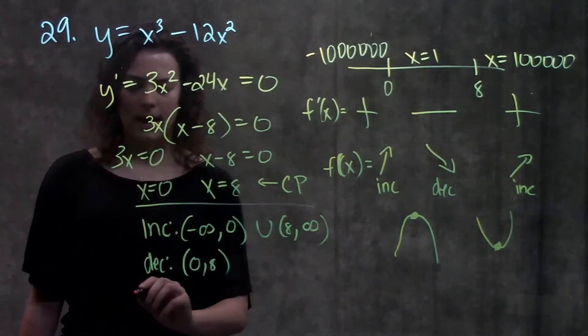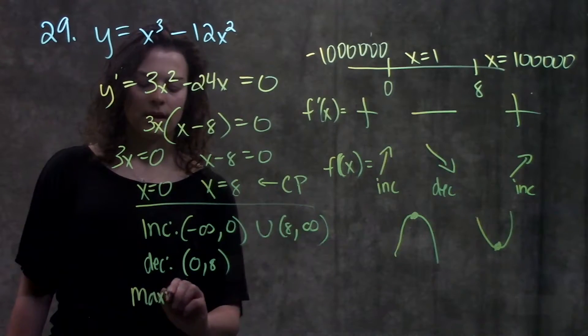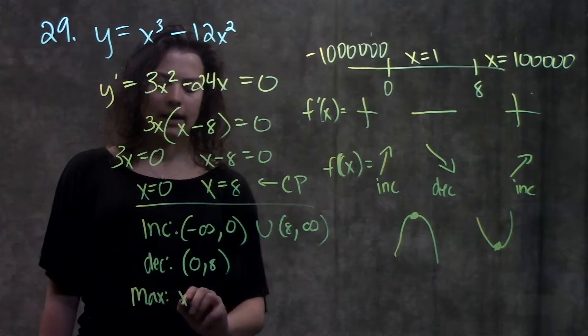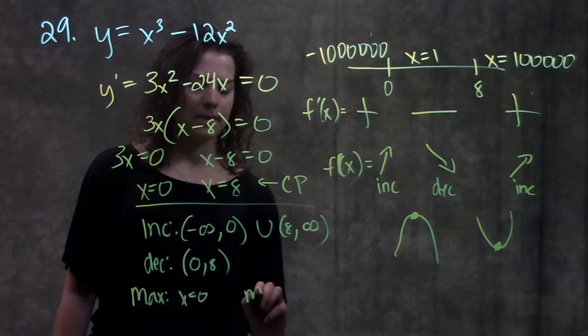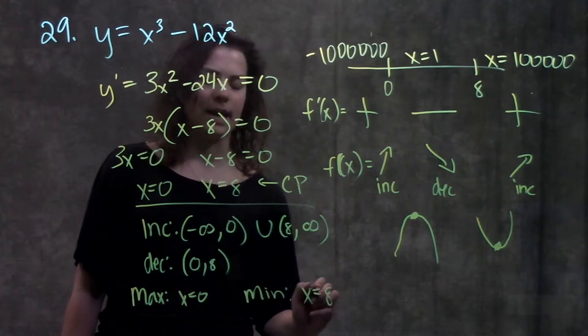I can write that here. My max value is at the point x equals zero, and my min value is at the point x equals eight.